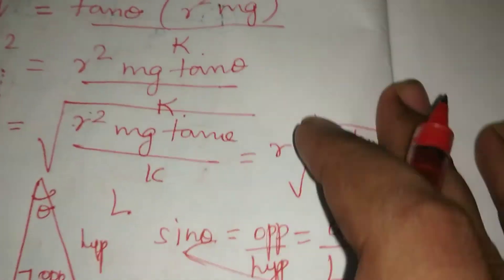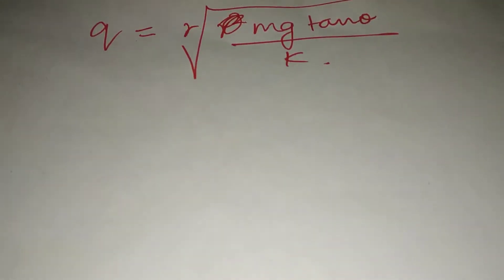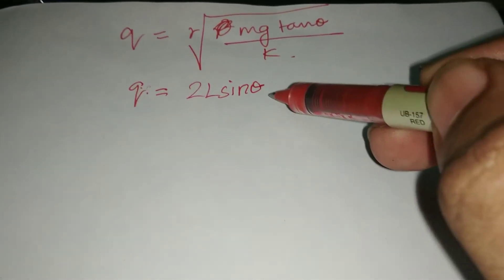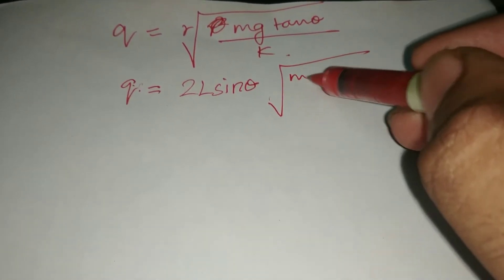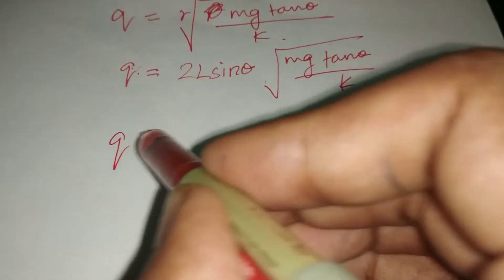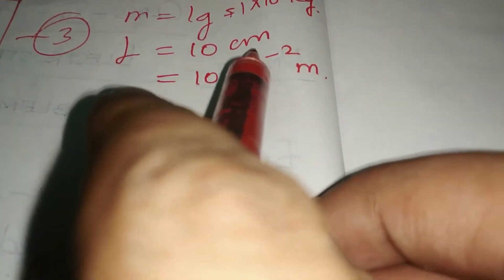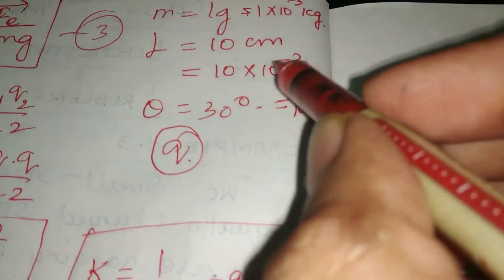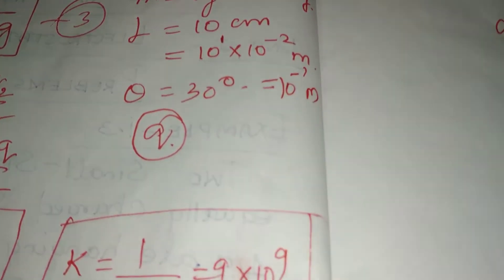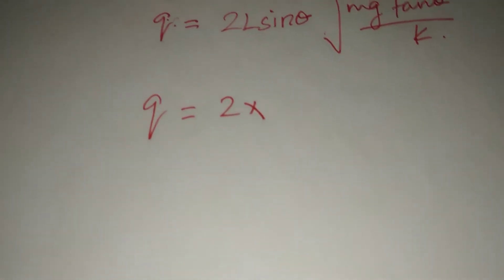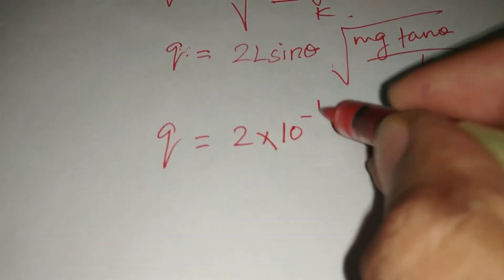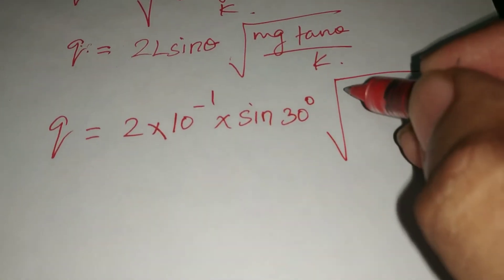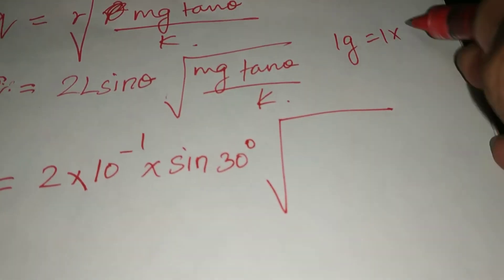Now q equals 2L sin theta × root of (mg tan theta / k). Substituting: L = 10 cm = 10 × 10⁻² = 10⁻¹ m, theta = 30°, mass = 1g = 1 × 10⁻³ kg, g = 10 m/s², and k = 9 × 10⁹.